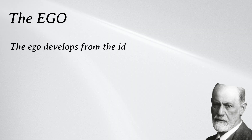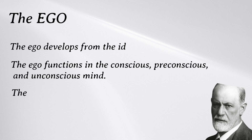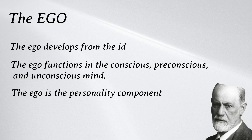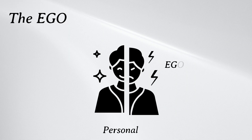Number two is the ego. According to Freud, the ego develops from the ID and ensures that the impulses of the ID can be expressed in a manner acceptable in the real world. The ego functions in the conscious, preconscious, and unconscious mind. In our previous video, we have discussed these three components in detail. The ego is the personality component responsible for dealing with reality. Everyone has an ego. The term ego is sometimes used to describe your cohesive awareness of your personality, but personality and ego are not the same. The ego represents just one component of your full personality.